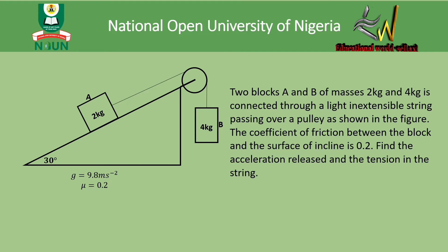The question goes as follows: two blocks A and B of masses 2 kg and 4 kg are connected through a light inextensible string passing over a pulley as shown in the figure. The coefficient of friction between the block and the surface of the incline is 0.2. Find the acceleration and the tension in the string.